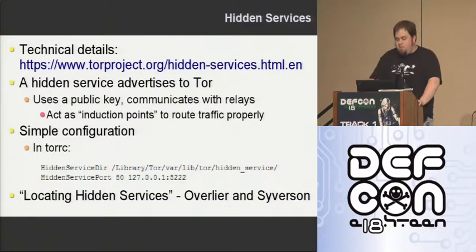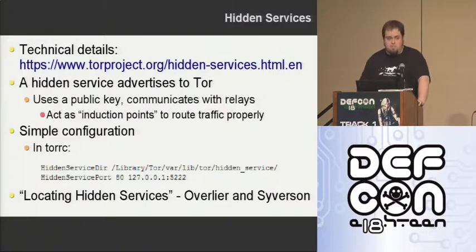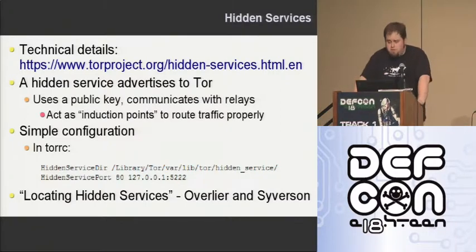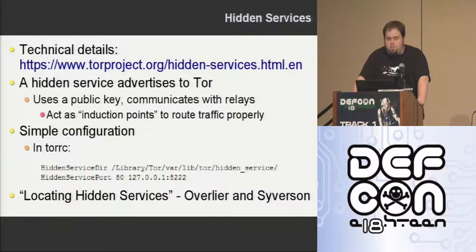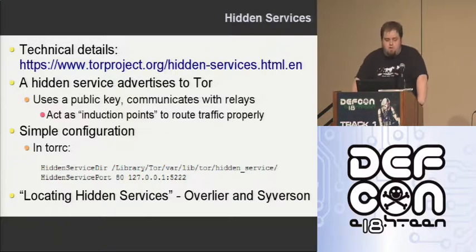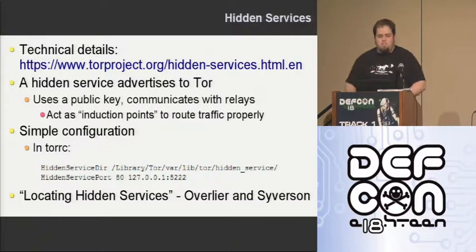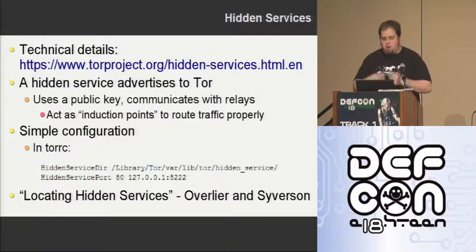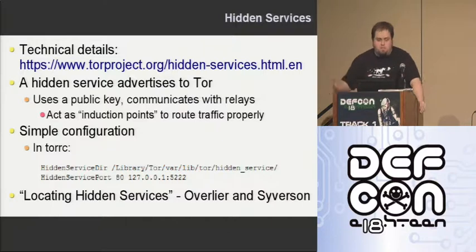I'll give my two or three line explanation, which is probably incorrect, so I'd encourage you to read that instead. Essentially, when you start a hidden service it advertises to the Tor network and uses a public key to communicate with relays. The first relay it communicates with will be an induction point to the network — meaning if somebody wants to get to your box, they have to go through him to reach your hidden service.